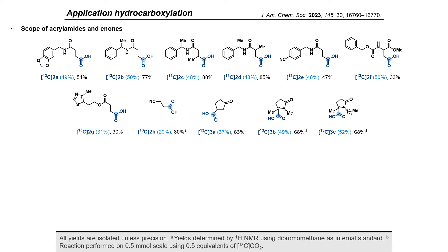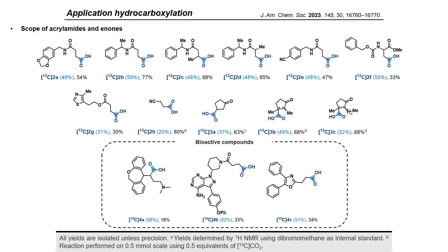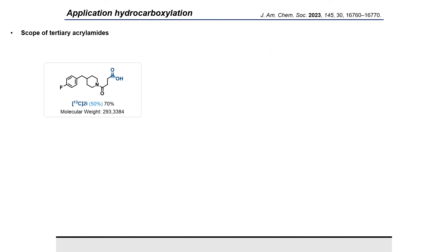The hydrocarboxylation was also shown to work with acrylamides and enones. This was quite interesting for us because it was a way to synthesize, for example, labeled aspartic acid. More importantly, we managed to make drug derivatization with moderate yields but interesting isotopic enrichment, demonstrating a great substrate tolerance.